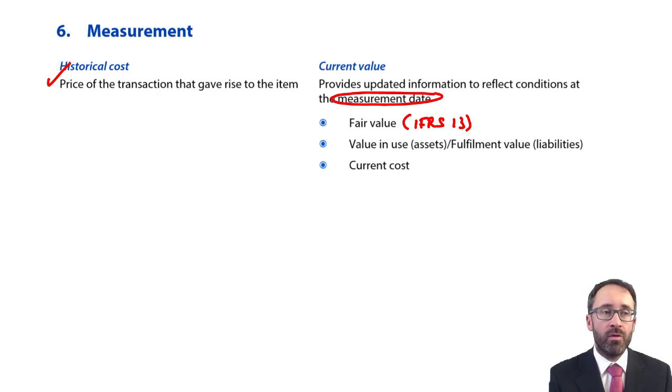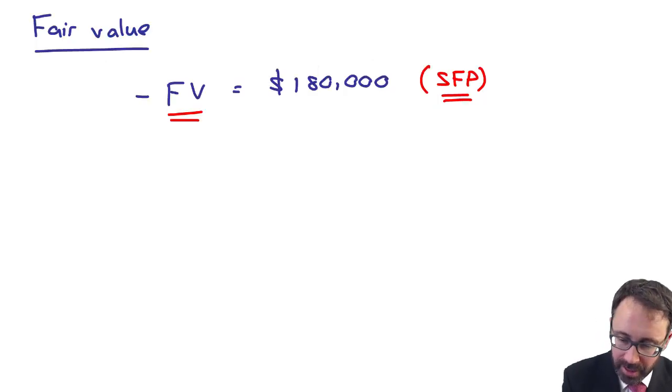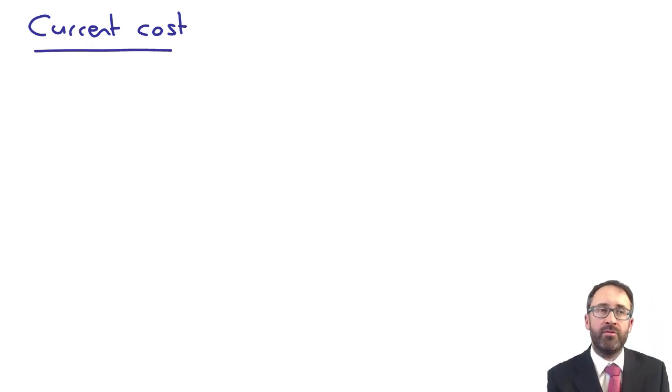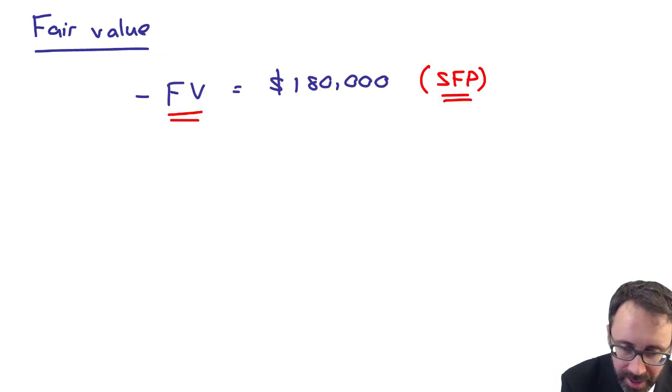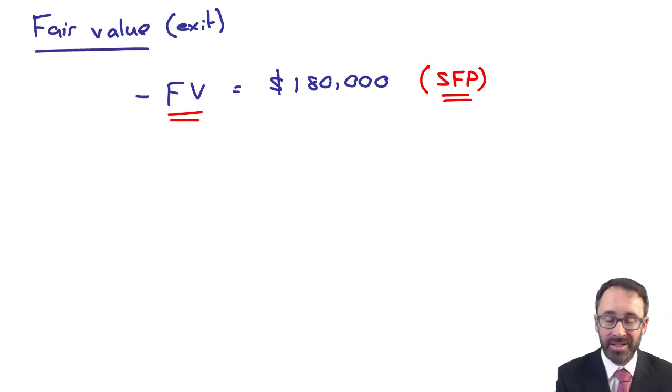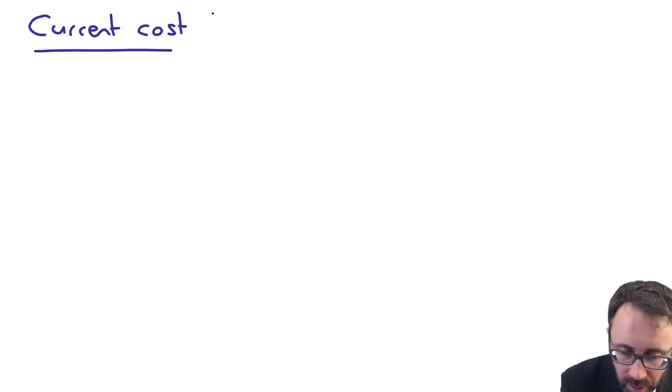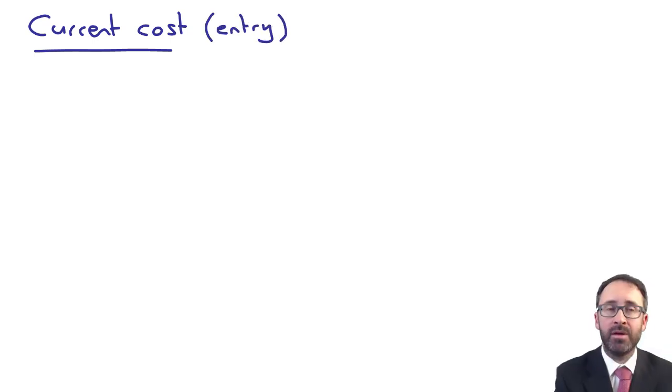What you've also got as well is your current cost. So we've spoken about fair value. What about your current cost? Well, your current cost is effectively saying, how much could we buy that asset for now? So we spoke about the fair value being an exit value. The current cost effectively is looking at it from an entry value perspective.